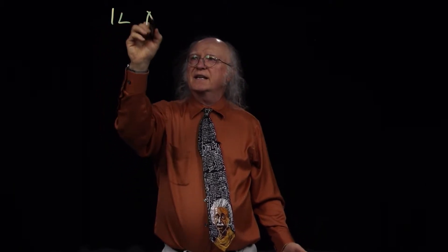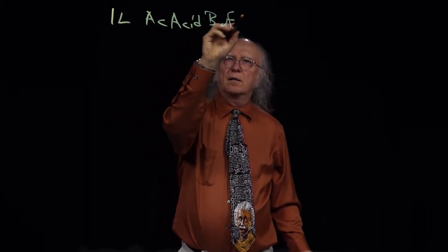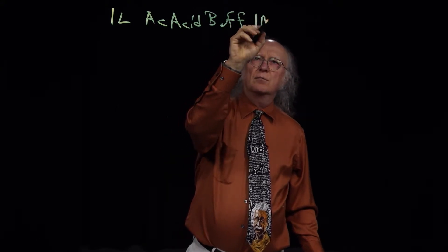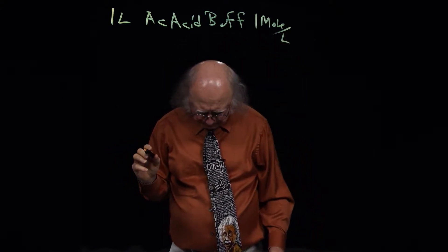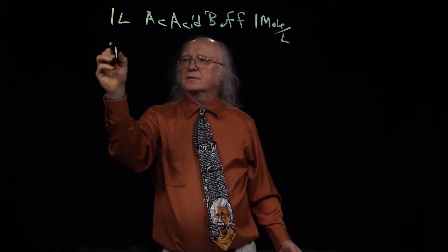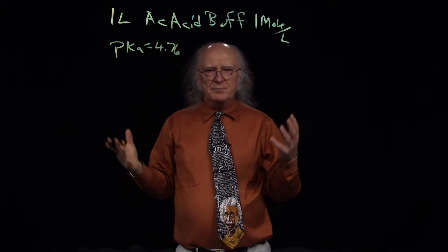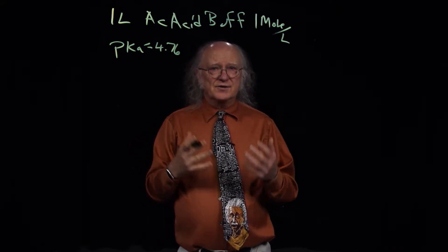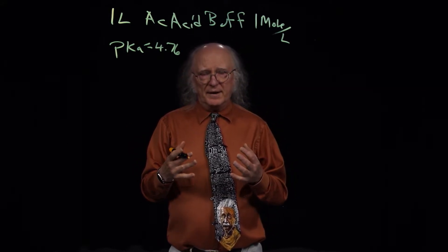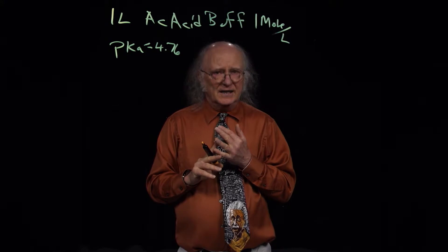Problem number 10 is a little bit more involved. It says I have one liter of an acetic acid buffer at a concentration of 1 molar, and the pKa value is 4.76. It's at maximum buffering capacity. Remember that maximum buffering capacity means we have equal amounts of salt and acid, so salt equals acid and pH equals pKa.